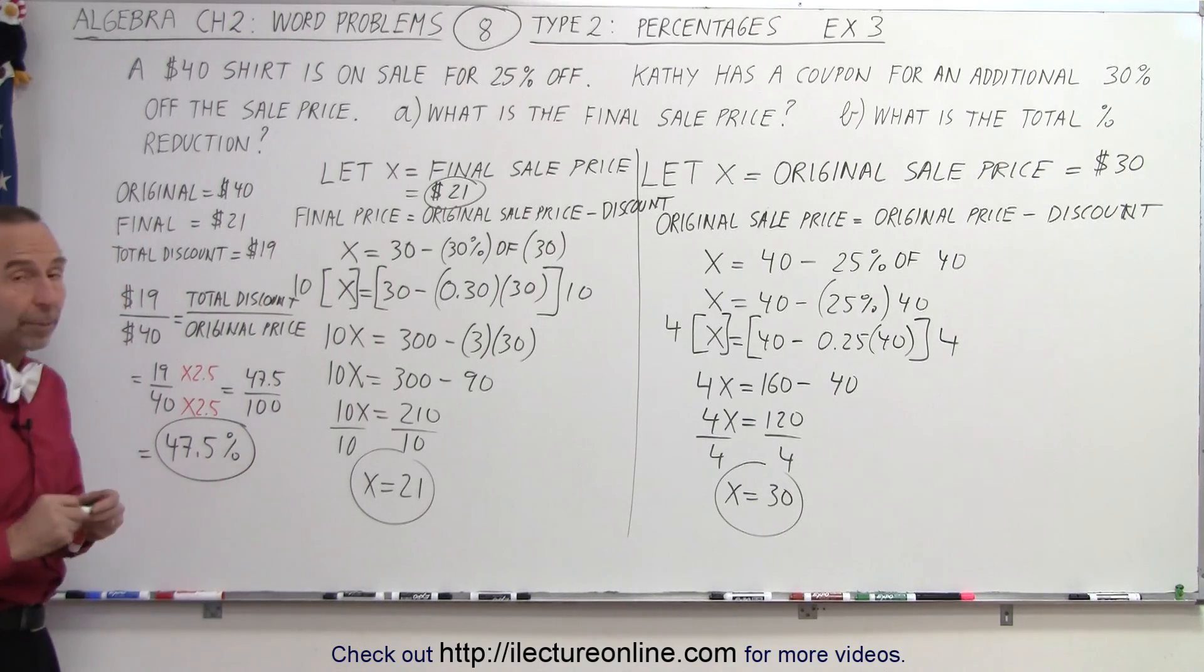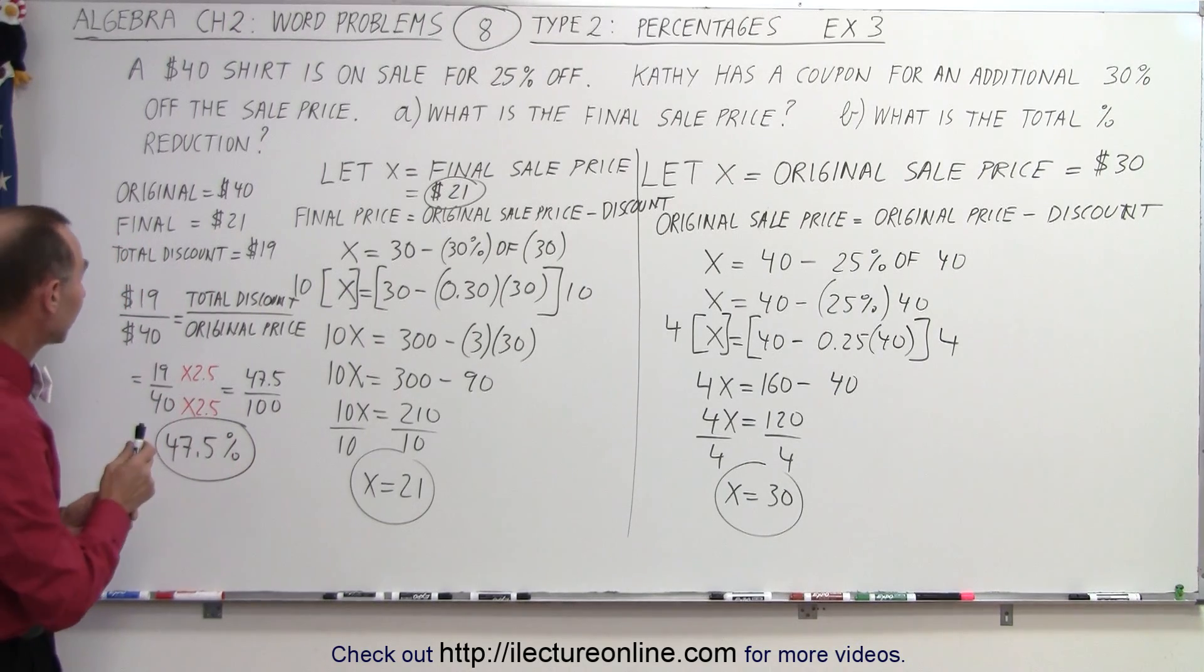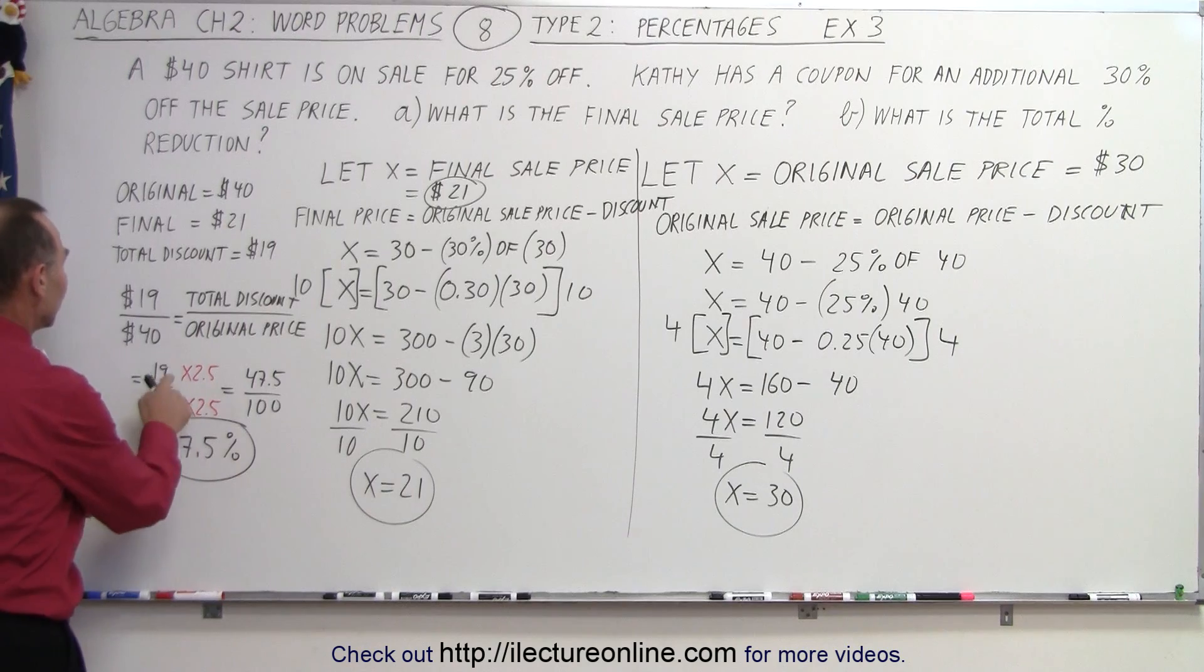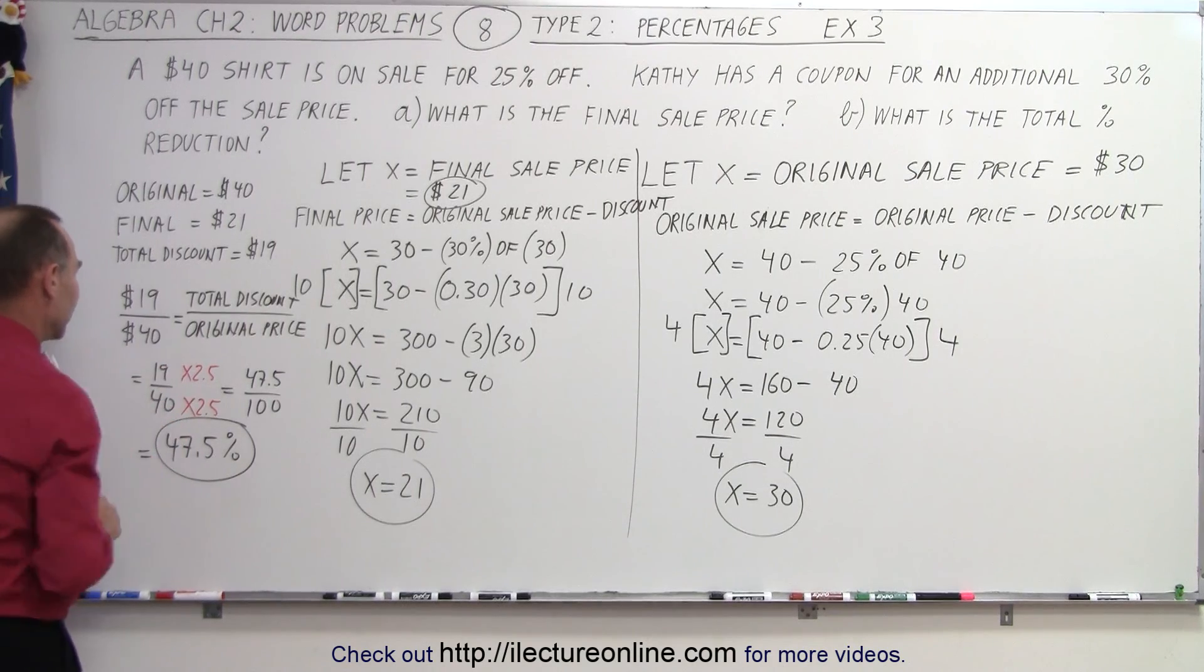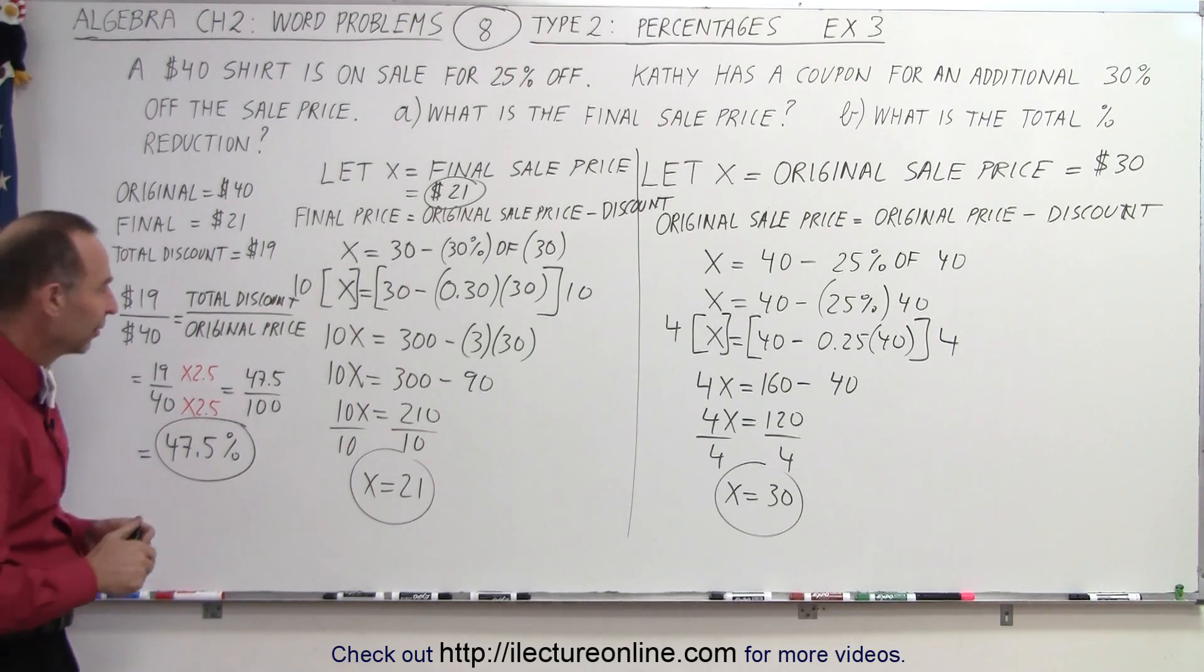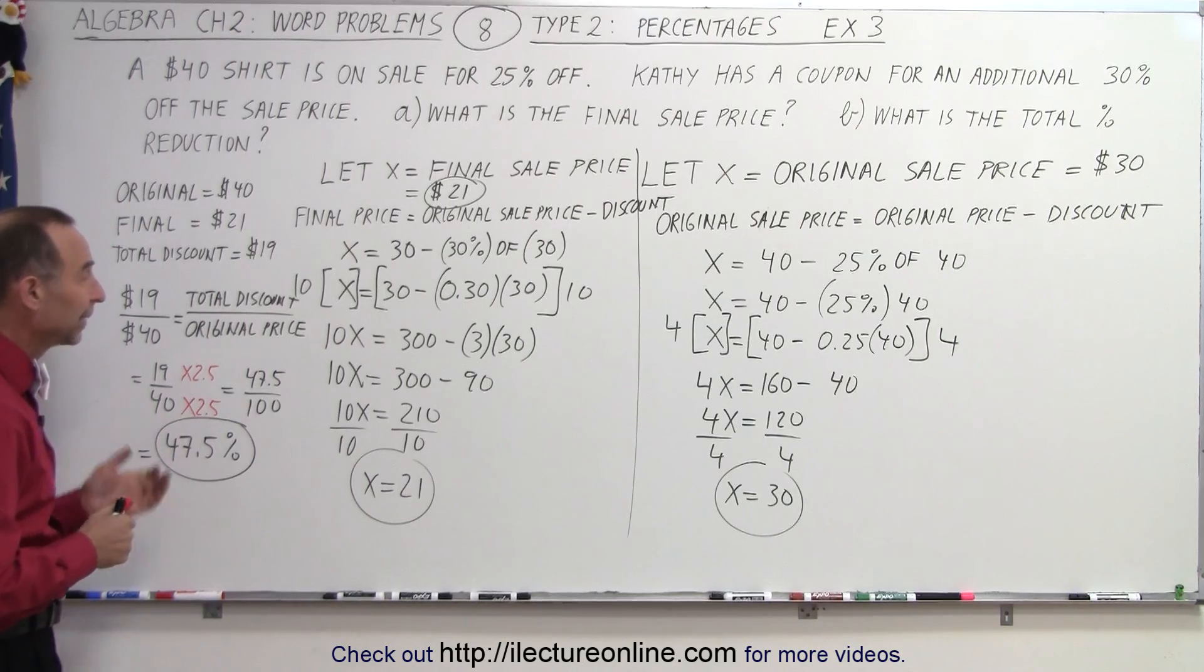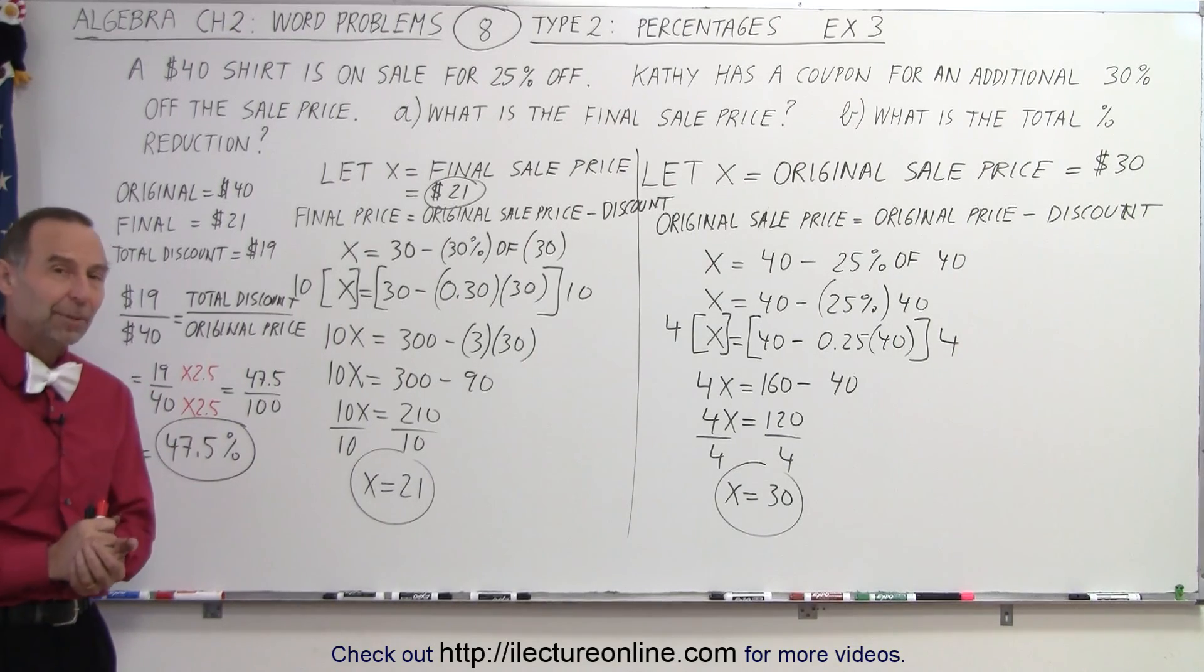solution to the second part of the problem. The total percent discount is 47.5%, which is $19 out of $40. So almost half off when you apply the final coupon. And that's how you solve a problem like that.